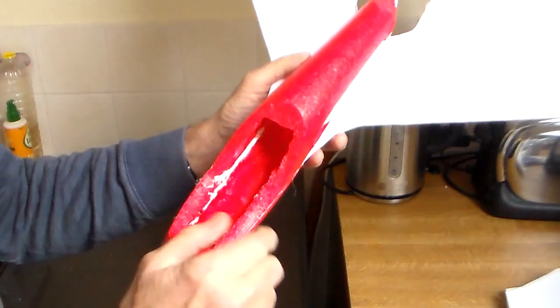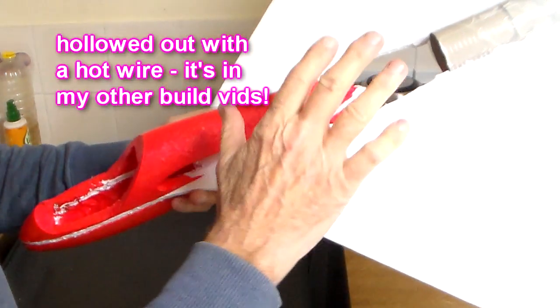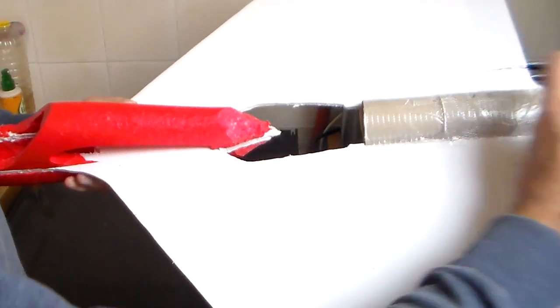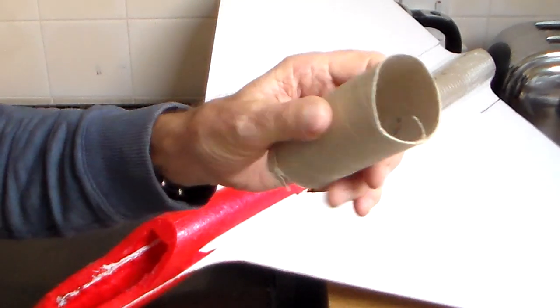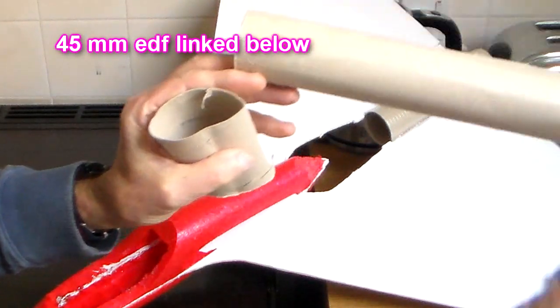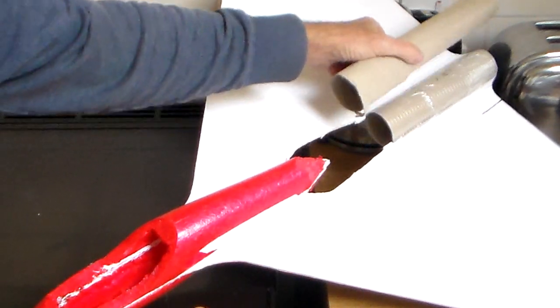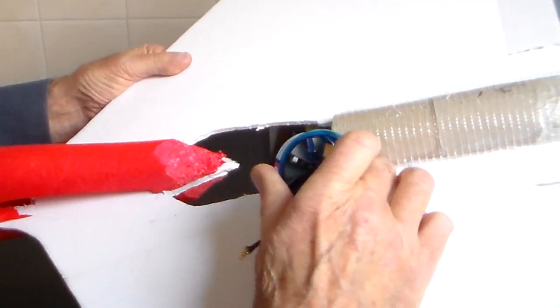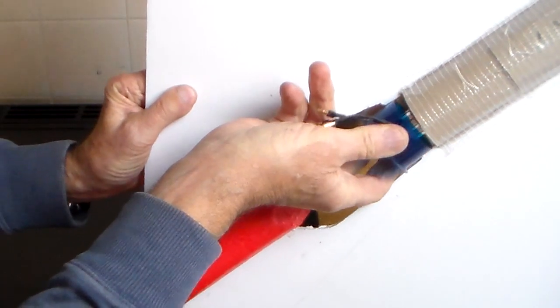Right, well I've hollowed it out and I've had to consider how I intended to mount the EDF. Now I considered building some ducting with foam board, but then I discovered much easier that toilet roll was the perfect size for this and kitchen roll fits nicely into that.